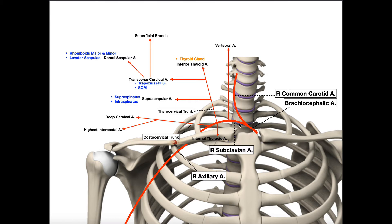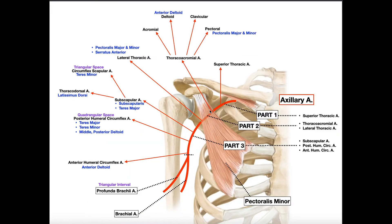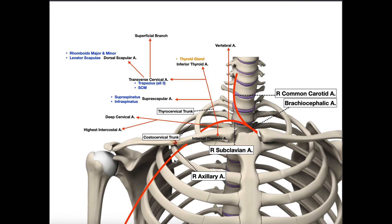The subclavian artery has three parts, and the division of those three parts is a muscle — the anterior scalene, or scalenus anterior — which inserts on the first rib. If you're before the anterior scalene, you're in the first part. If you're deep to or posterior to the anterior scalene, you're in the second part. The third part is lateral to, or after you pass, the anterior scalene.